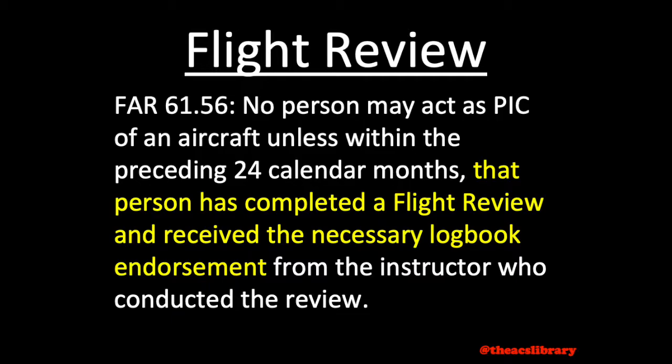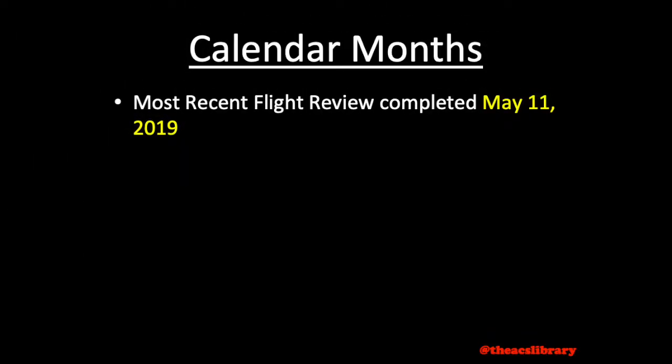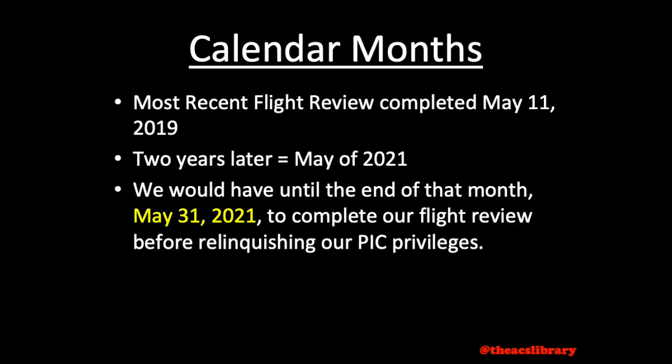It can be explained with a simple example. Let's assume that our most recent flight review was completed on May 11th, 2019. 24 months later would set us to May of 2021, and we would have until the end of that month to complete our flight review. In this case, our next flight review would be due May 31st of 2021. Upon completion of the flight review, don't forget to get your logbook endorsed before leaving.